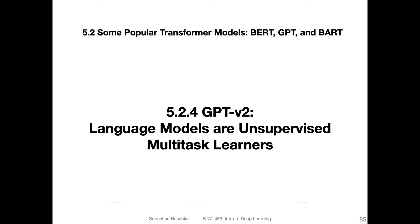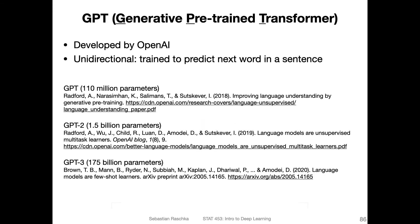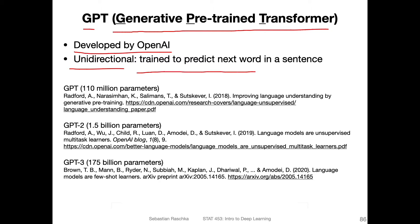Let's now talk about GPT version two. Before we talked about GPT version one — just to recap, GPT stands for generative pre-trained transformer. These are models developed by OpenAI research. One fundamental aspect about them is that they are unidirectional models, trained to predict the next word in a sentence or sequence, in contrast to the BERT model, which has a bidirectional language modeling approach.